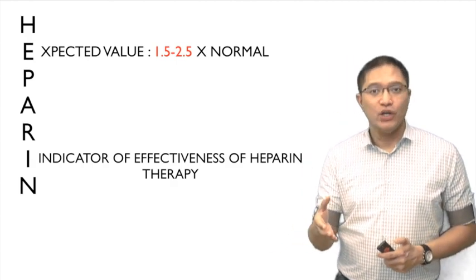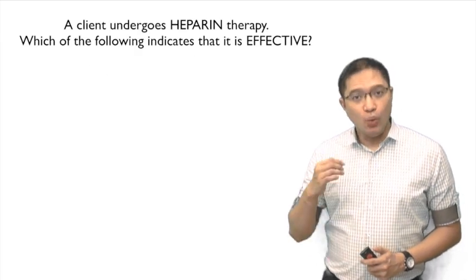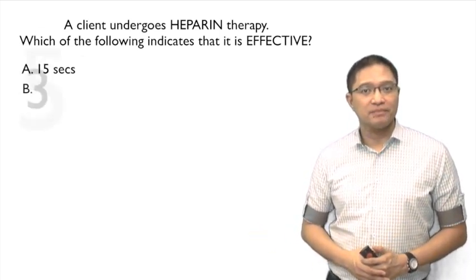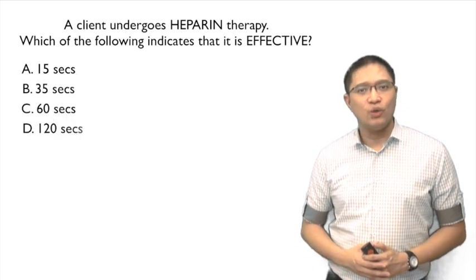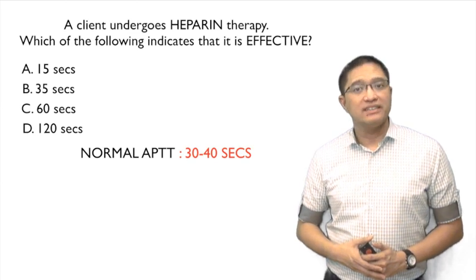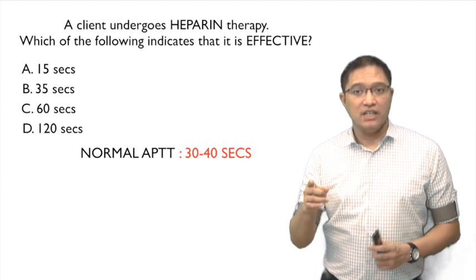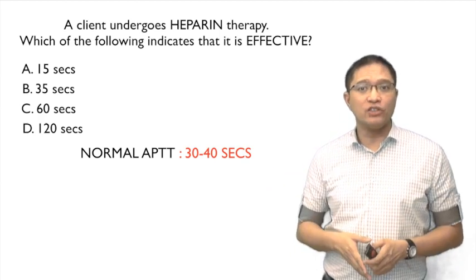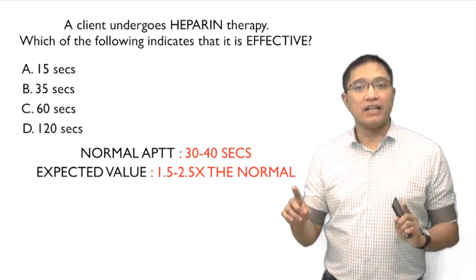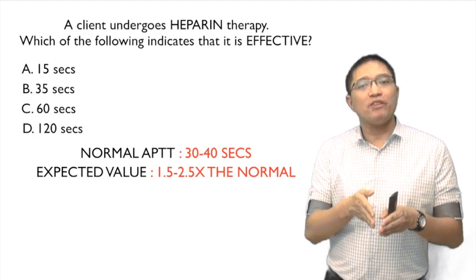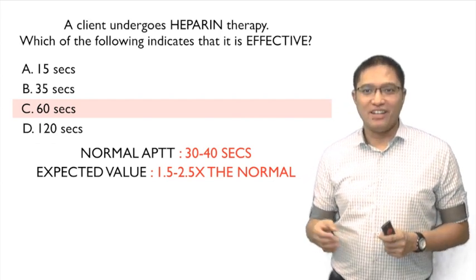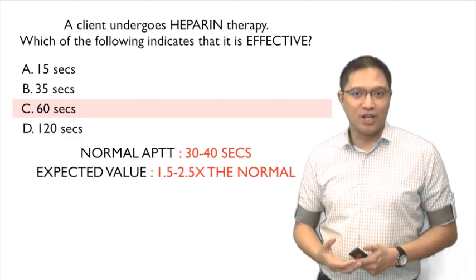Here is an example. A client undergoes heparin therapy. Which of the following indicates that heparin therapy is effective? A) APTT is 15 seconds, B) 35 seconds, C) 60 seconds, or D) 120 seconds. To answer correctly, go back to the normal value, which is 30 to 40 seconds. You may be tempted to answer B because it's within the normal APTT, but that is not correct. The expected value is 1.5 to 2.5 times the normal, so it couldn't be 35 seconds. The best answer is 60 seconds because it is twice the normal range, using 30 seconds as the baseline.